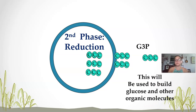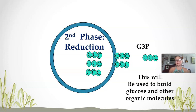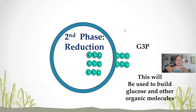These three carbons will leave the Calvin cycle and this is our G3P — glyceraldehyde-3-phosphate — a very simple three-carbon sugar made during the Calvin cycle. This is the most basic building block for our carbohydrates, lipids, proteins, and nucleic acids. This G3P will actually leave and go to the cytoplasm, where other enzymes will convert it in different chemical reactions to make our organic molecules of life.